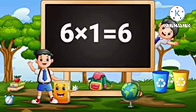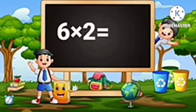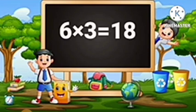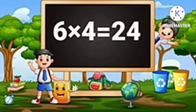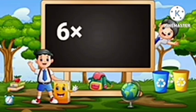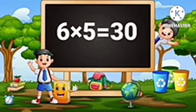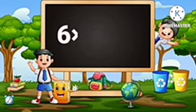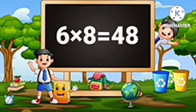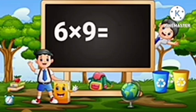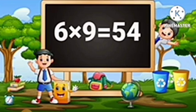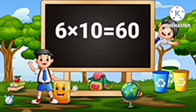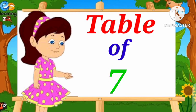Table of Six. Six-One's are Six. Six-Two's are Twelve. Six-Three's are Eighteen. Six-Four's are Twenty-Four. Six-Five's are Thirty. Six-Six's are Thirty-Six. Six-Seven's are Forty-Two. Six-Eight's are Forty-Eight. Six-Nine's are Fifty-Four. Six-Ten's are Sixty.